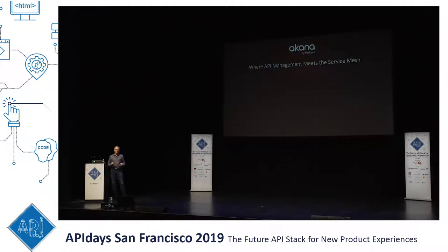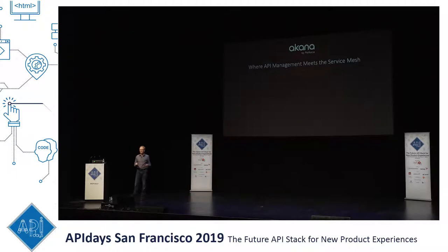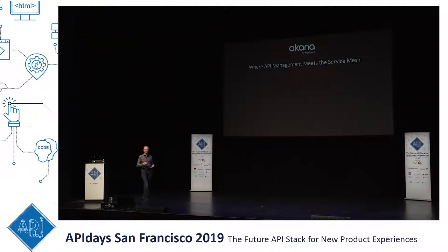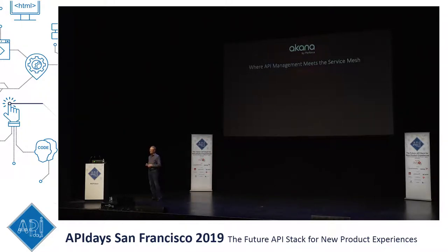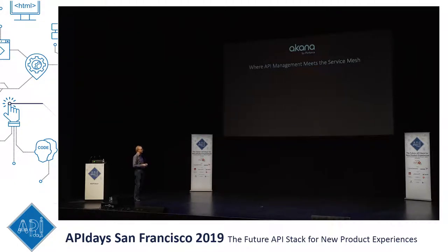We're going to talk about API management and where it meets a service mesh. As I travel around and talk to people at conferences and customers, there's a lot of confusion. What's the difference? If I'm using a service mesh, do I need API management, or vice versa? Don't they do the same thing? Can't I just deploy an NGINX plug-in and some microservices straight to production?